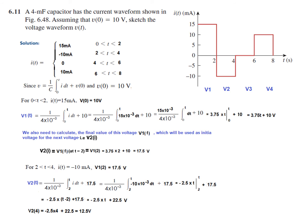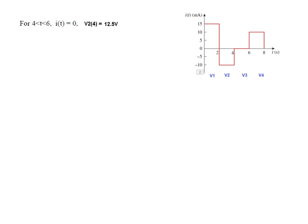From V2 we calculate the final value, which becomes the initial value of V3 — that is 12.5 V. From time 4 to 6, I(T) = 0, so plugging into the formula with limits 4 to T and I = 0 gives a constant value of 12.5 V. The final value V3(6) is also 12.5 V.